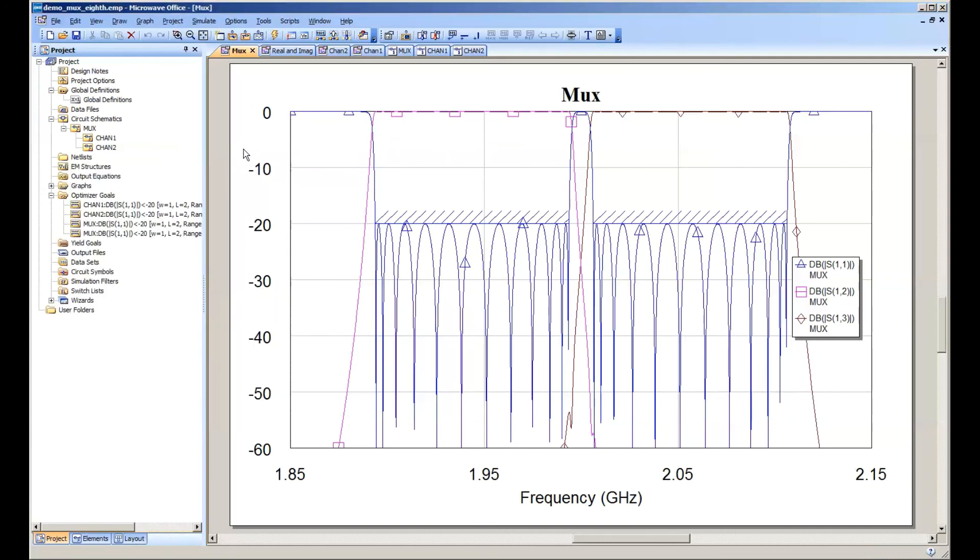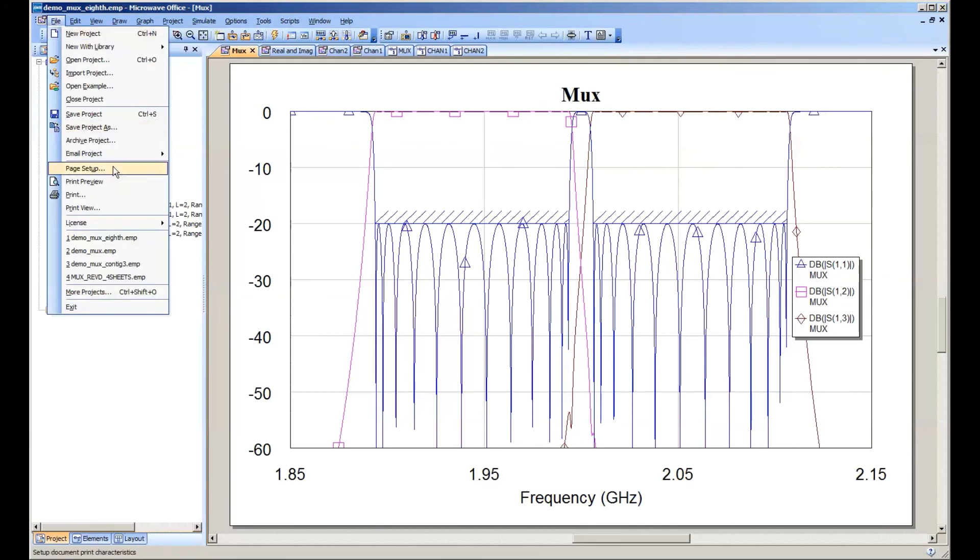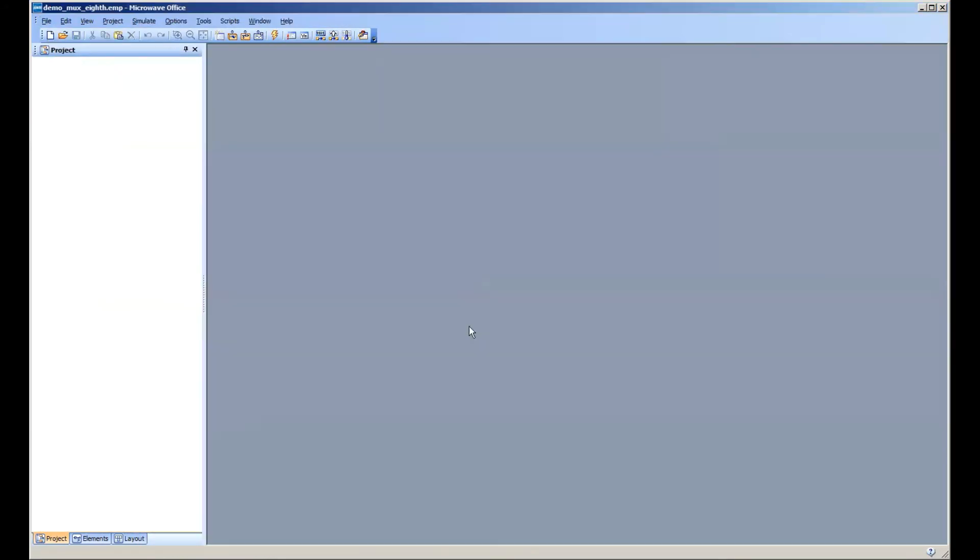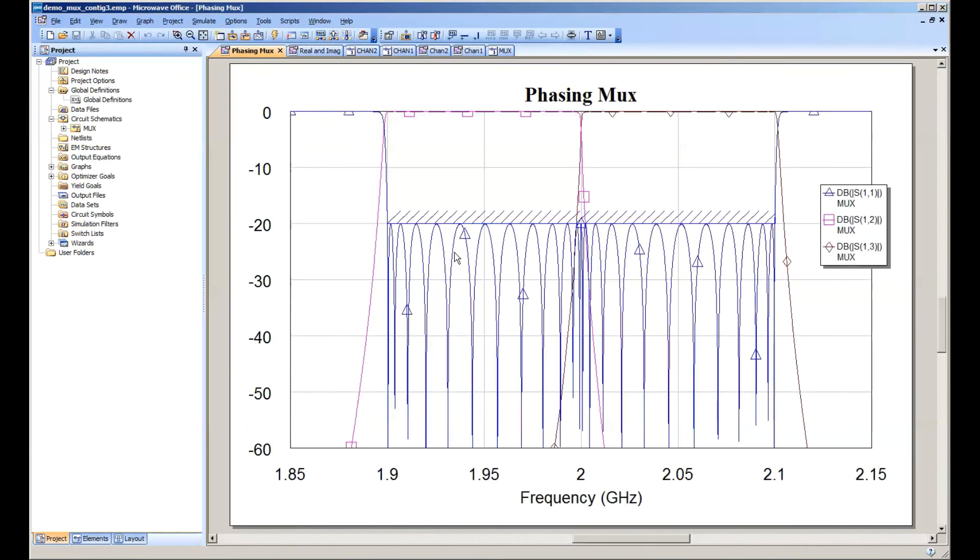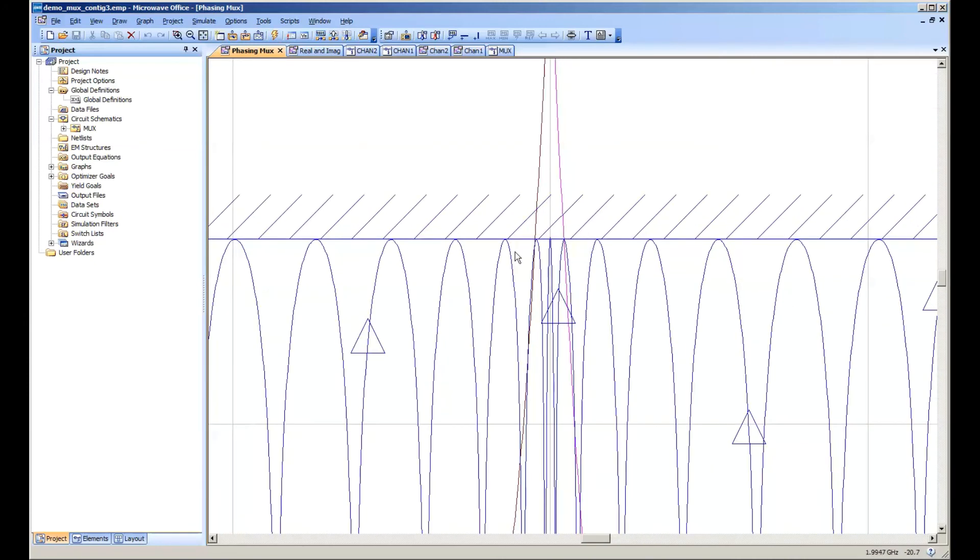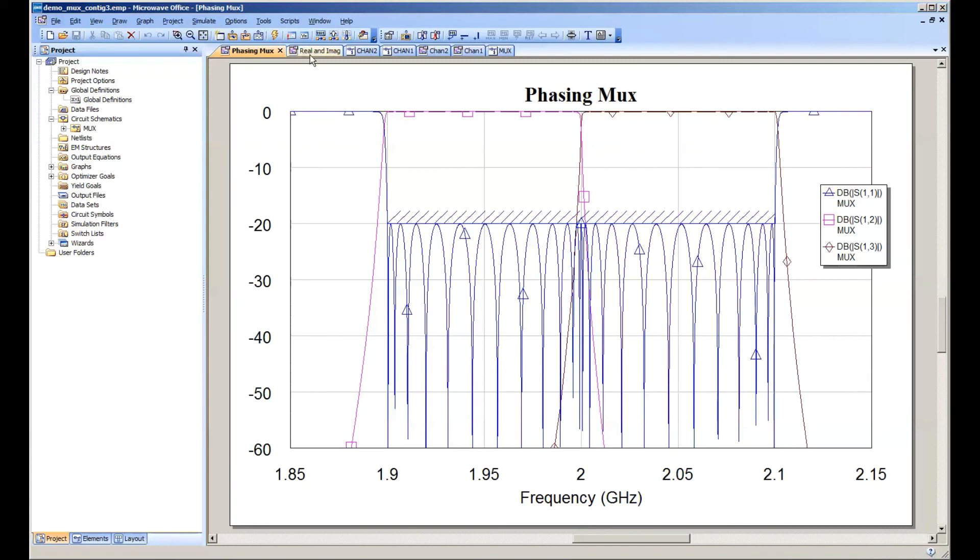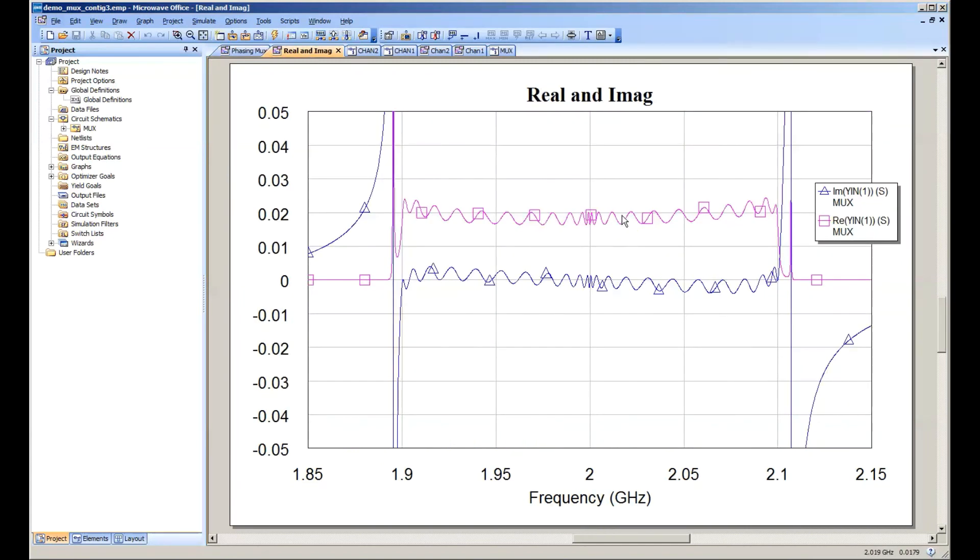So that process does take a little while, but I've got a finished project here. And this is what it looks like when you walk the two channels in successfully. And notice we've got, you know, perfect return loss across the crossover region of the diplexer. And if we go back and look at the real and imaginary parts, again, they're perfect in the crossover regions. They sum to 0.02 here for the real part and they're summing to zero for the imaginary part.